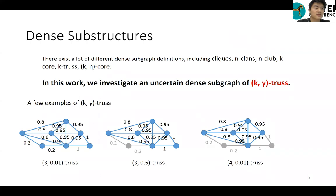Here are a few examples of k-gamma-truths for different k and gamma. This is the 3-0.01-truths. When we increase parameter gamma, we obtain a denser subgraph of 3-0.5-truths by removing two weakly connected edges. Similarly, when we increase parameter k from 3 to 4, we obtain a smaller k-gamma-truths, which is much denser than 3-0.01-truths.